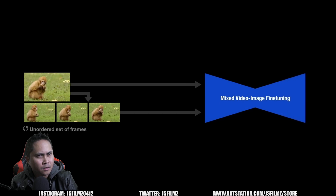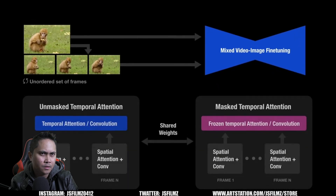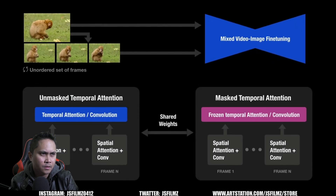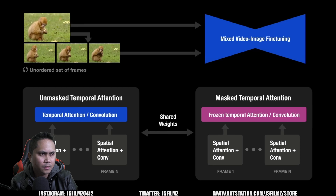Instead, they suggest a mixed objective that also includes fine-tuning on the unordered set of frames of the video. Regular video fine-tuning uses unmasked temporal attention; however, to train on the unordered set of frames they use masked temporal attention that freezes the temporal attention and convolution. This has the benefit of preserving the appearance of the video while allowing editing of its motion.